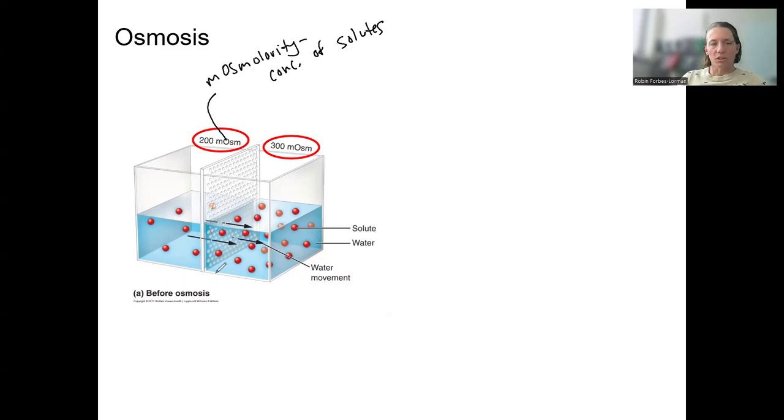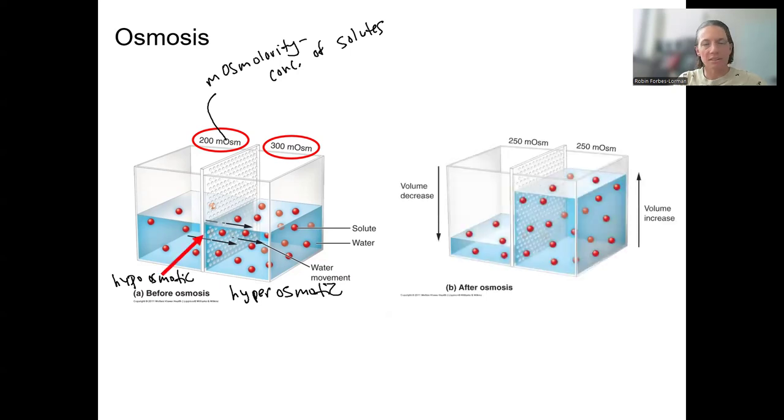This is also called moving to the side that is hyperosmotic. Hyper means higher. It's a relative term, kind of like directional terms. This side is hypoosmotic compared to that side. So water will move from low to high to reach equilibrium, which is going to look like this. Now milliosmoles are equal on the right and left after osmosis. So again, osmolarity is in equilibrium. In this case, we can see it with the numbers.